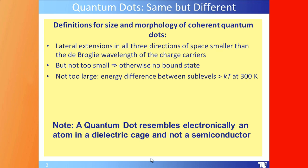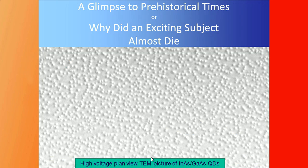We have certain boundaries for sizes and morphology of coherent quantum dots. A glimpse at prehistorical times: the subject is precisely 30 years old. What we see here is not measles but a high-voltage bright-field transmission electron microscopy picture of InAs/GaAs quantum dots.